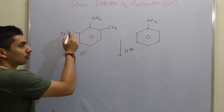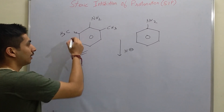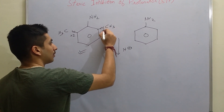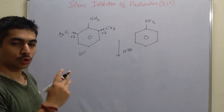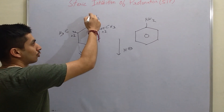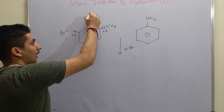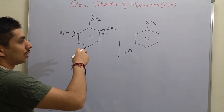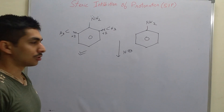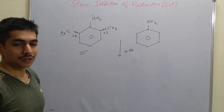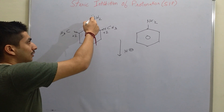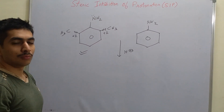Why? Because this methyl group has a +I effect and it is at the ortho position. Similarly, this methyl group also has a +I effect at the ortho position. So there are two methyl groups and both have +I effect. Because of this +I effect, the electron density on this nitrogen is going to increase. So it will appear to be more basic.